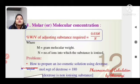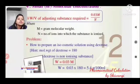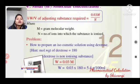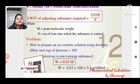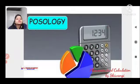Molar/Molecular Concentration Method formula: Percentage w/v of adjusting substance required = 0.03M / (M × N), where M is the gram molecular weight and N is the number of ions the substance produces on ionization. Example: For dextrose (MW = 180), W = 0.03 × 180 / N, with N = 1 (non-electrolyte, 100 used in calculation).